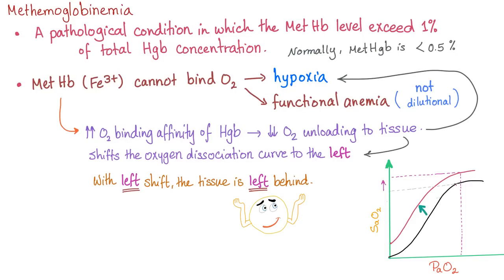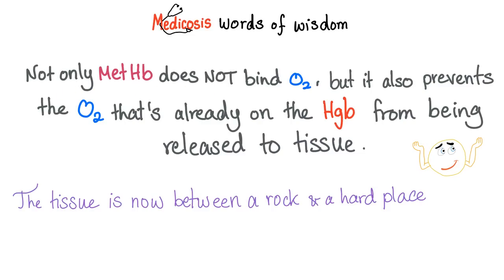Methemoglobinemia is a pathological condition in which methemoglobin exceeds 1% — normally less than 0.5% of total hemoglobin. When you have ferric iron not carrying oxygen, you end up with hypoxia and functional anemia — not dilutional, but functional. Moreover, methemoglobin increases oxygen binding affinity of hemoglobin, causing left-shifting of the oxygen dissociation curve, which decreases oxygen unloading to tissue. Not only does methemoglobin not bind oxygen, it also prevents oxygen already on hemoglobin from being released.